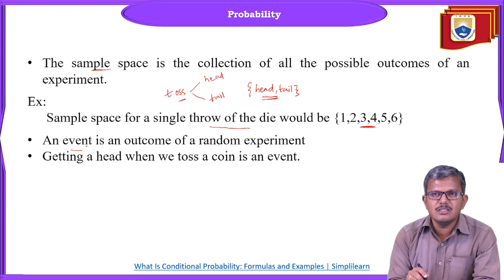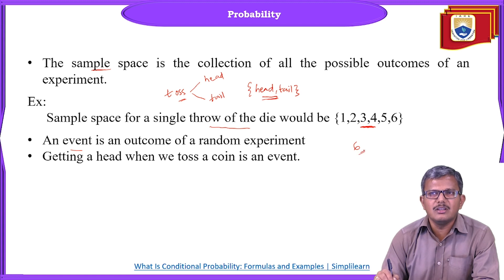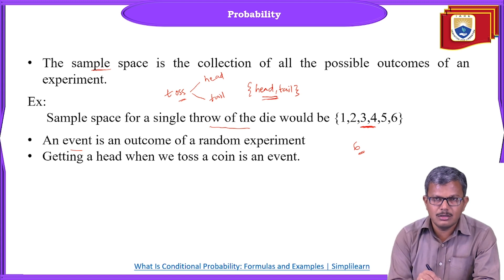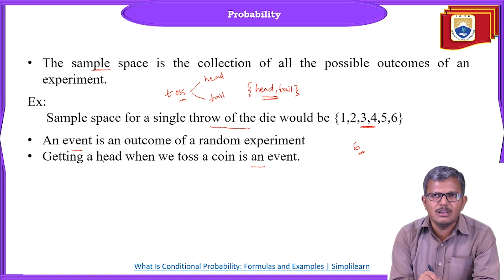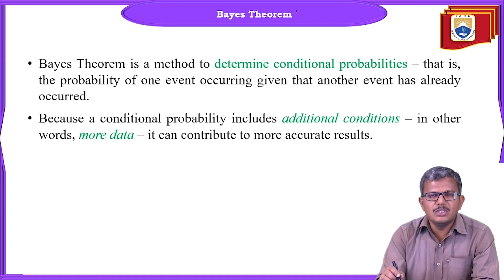What do we mean by an event? An event is an outcome of the random experiment. For example, if I throw a die and get the result six, throwing the die is an event and six is the outcome. Similarly, getting a head when tossing a coin is an event. Each activity we perform we can call an event.